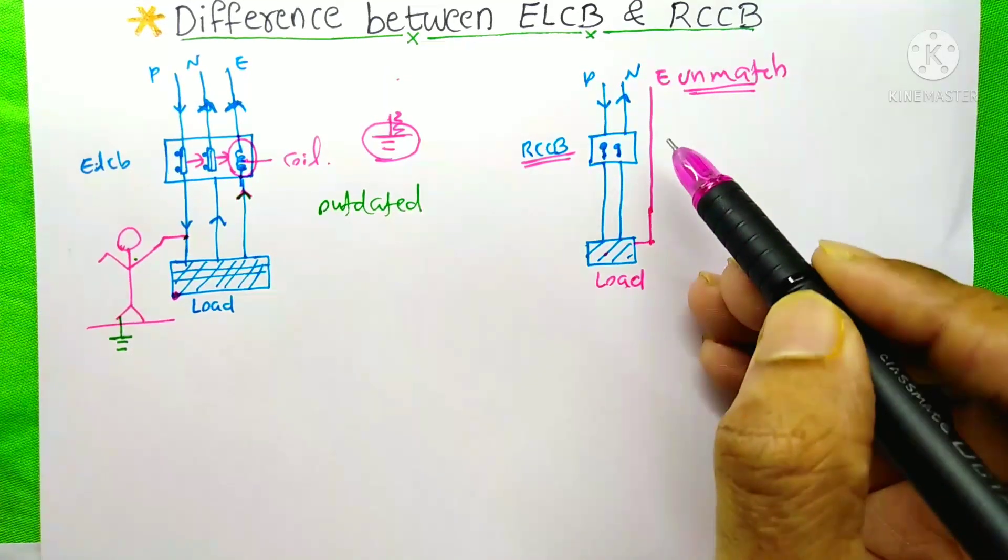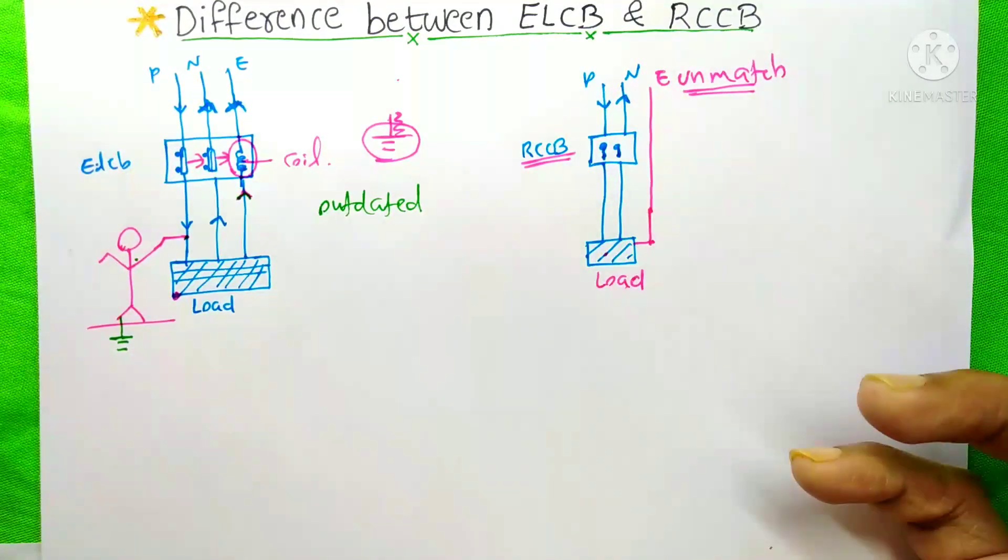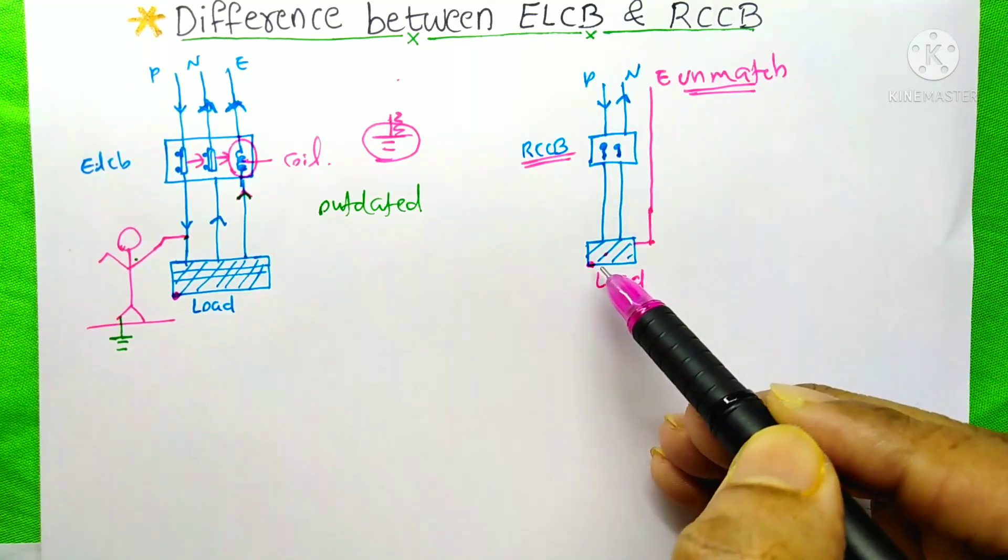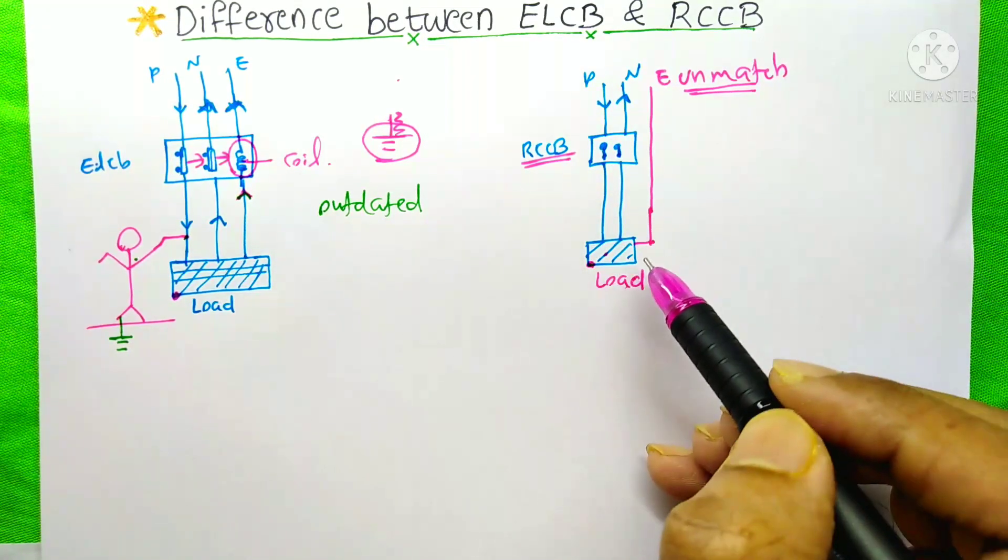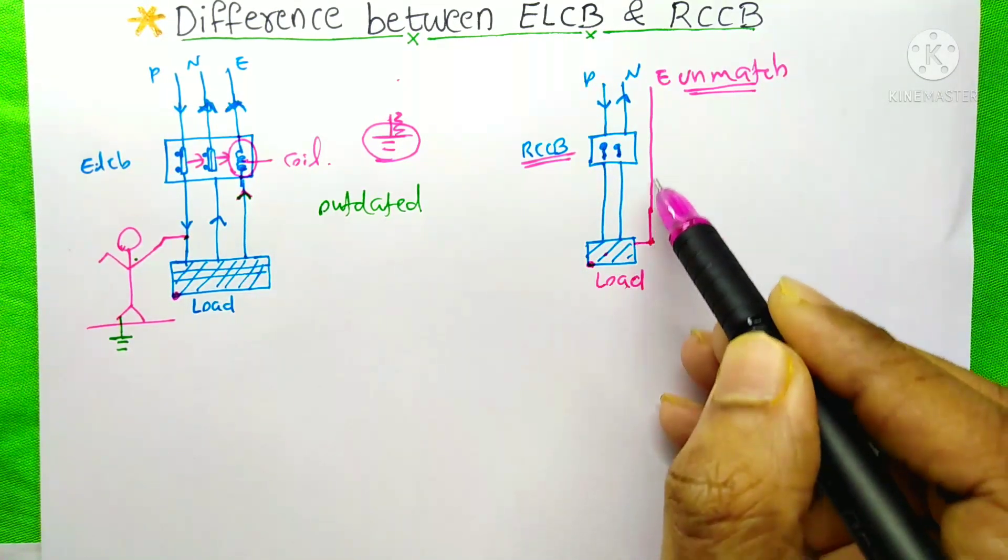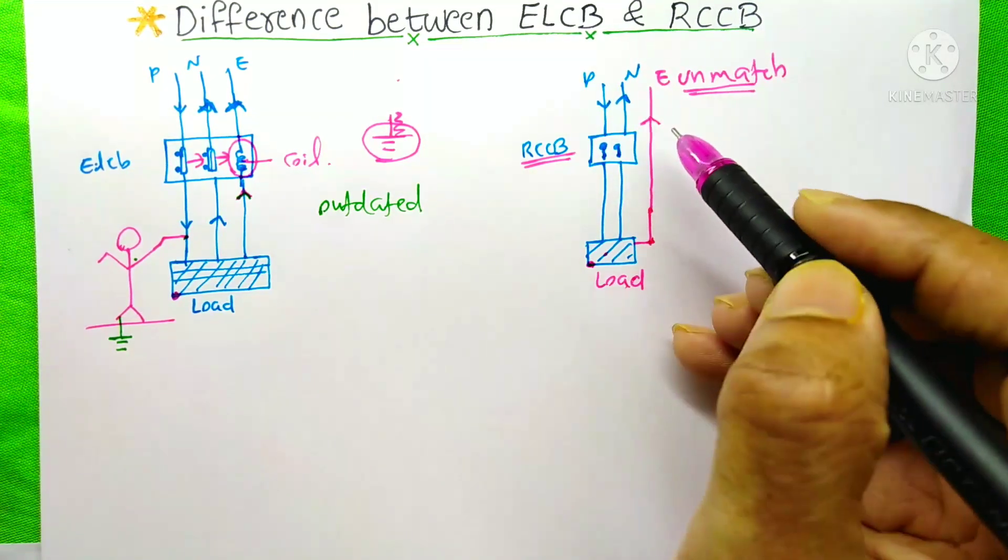But we can connect the earth to the load without touching this RCCB. Suppose this phase touches the body part of this load, at that time, the leakage current will go through this way, to the earth.